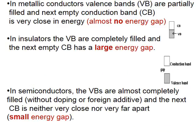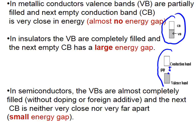In metals or metallic conductors, valence bands are partly filled, and the next empty conduction band is very close in energy — almost no gap. In an insulator, there is a large gap between the valence band and the conduction band. The valence band is completely filled, and it is hard for electrons to jump from the lower-lying valence band to the conduction band, which is why insulators are not conductors.